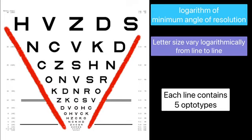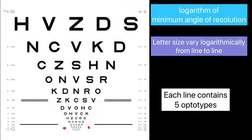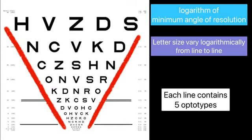This variation in size of letter is determined according to the base 10 logarithm of the critical details in minutes of arc of letters.